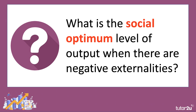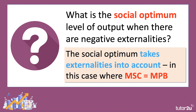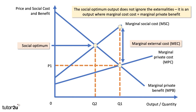So what is the social optimum level of output when there are negative externalities? We're ignoring externalities from consumption here. The social optimum is where we take the externalities into account — where MSC, marginal social cost, equals marginal private benefit. That's output level Q2. External costs damage third parties through dust particles and air pollution, but producers don't necessarily have to pay, meaning the free market output Q1 is too high and the market price will be too low, unless we adjust.